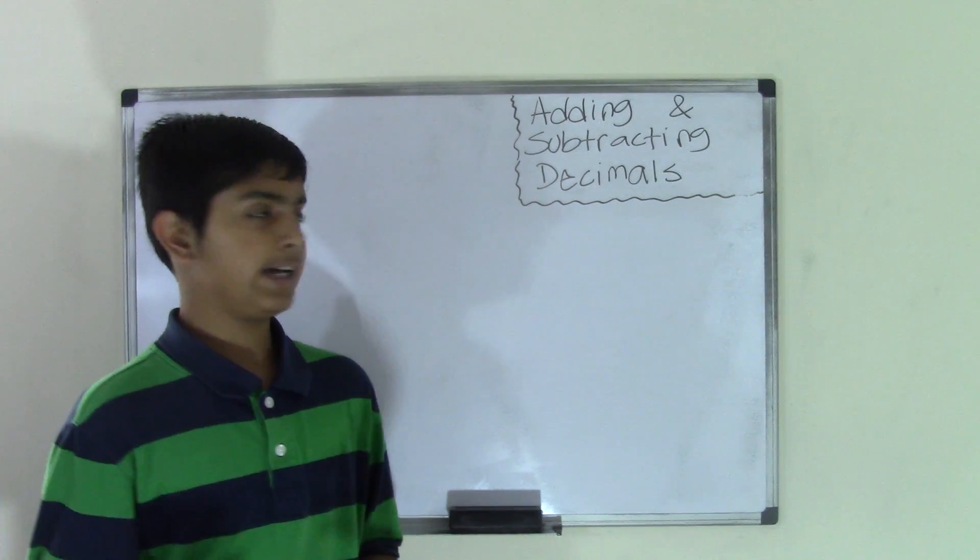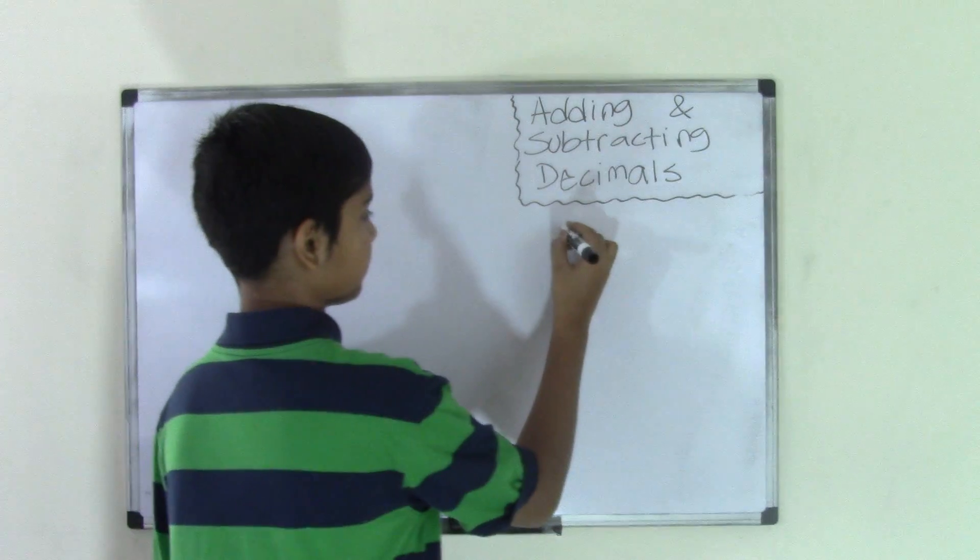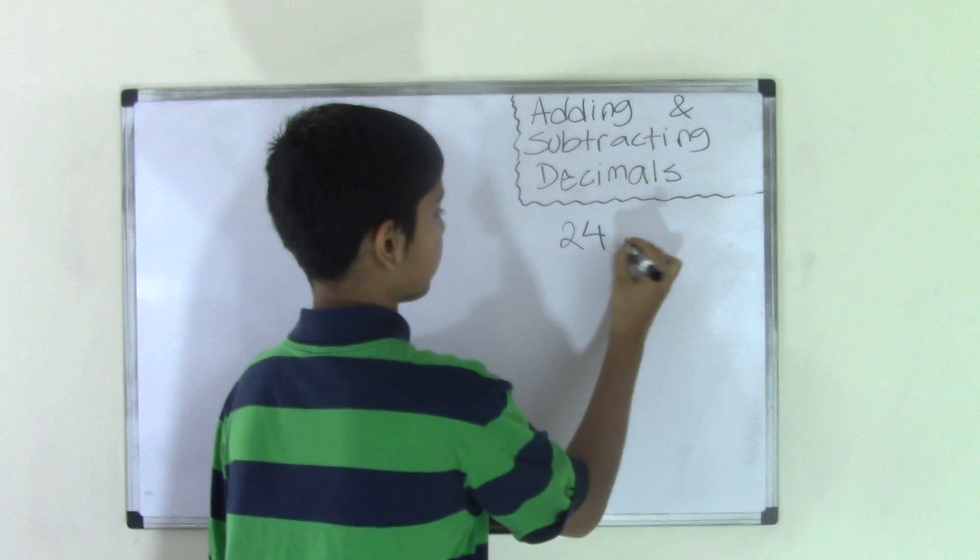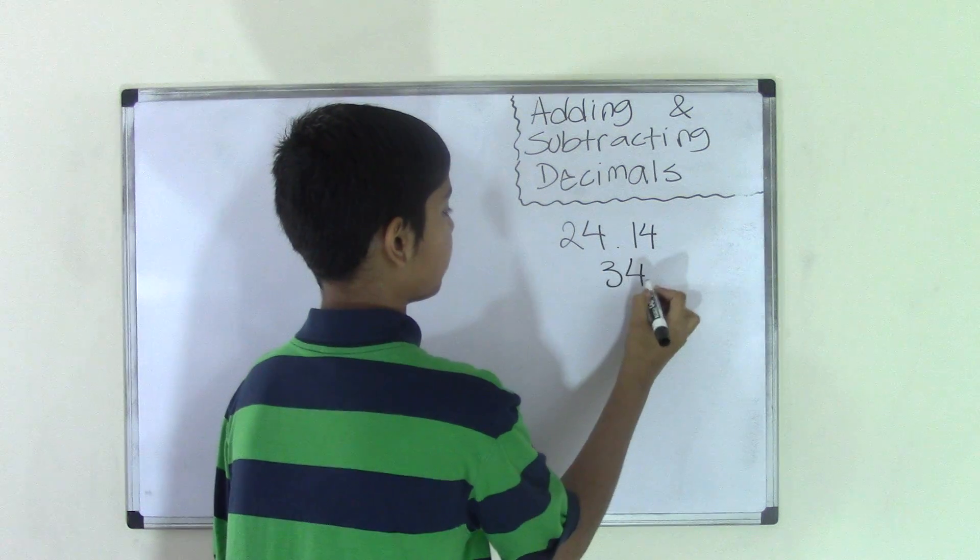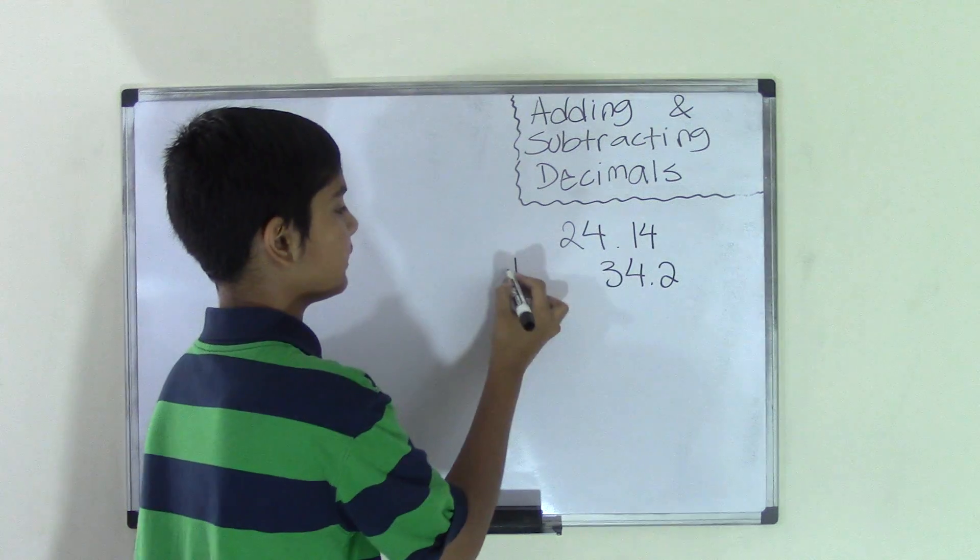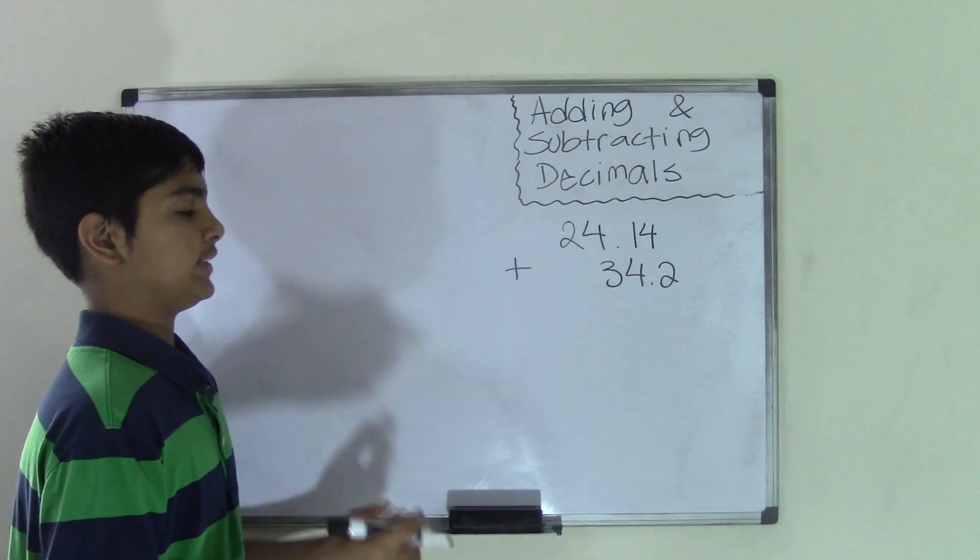First, let's start off by adding decimals. So let's take the two numbers, 24.14 and 34.2, and we need to add these two numbers.